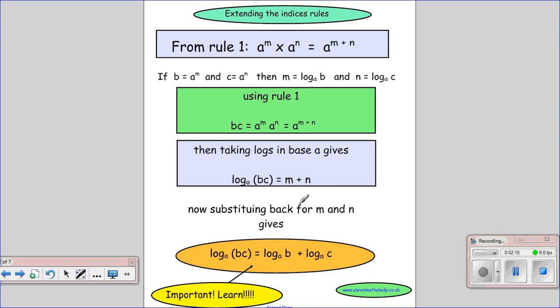Now, substituting back for m and n, so we have m and n here, we're going to put them in here. We see that we get log in base a of b times c is the same as log in base a of b plus log in base a of c. Now, this is really important. So when we have log of two numbers which are multiplied, we can split the log into two bits and add them together.